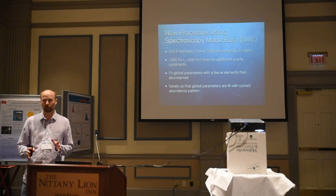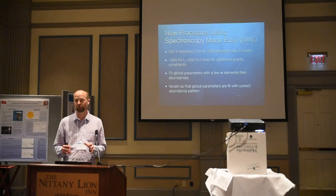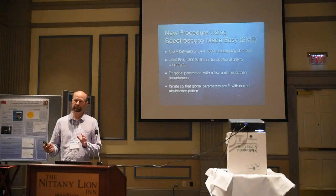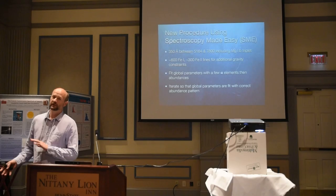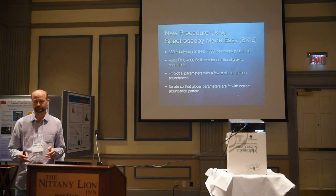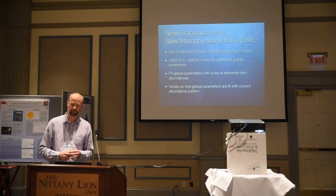Unfortunately, the magnesium B triplet breaks down above about 6,000 Kelvin. We're also including 900 iron lines — both Fe I and Fe II lines — and we're breaking up the fit: first fitting the global stellar parameters, then fitting for the abundances, then going back with that new abundance pattern to refit the global parameters, and finally doing one last pass to refine the abundances.